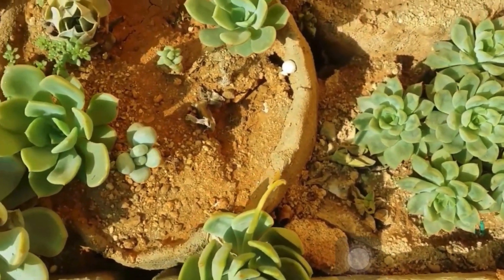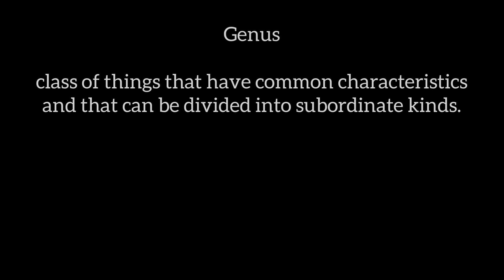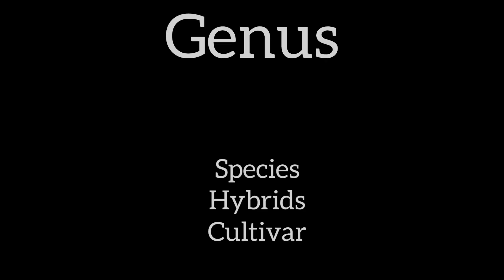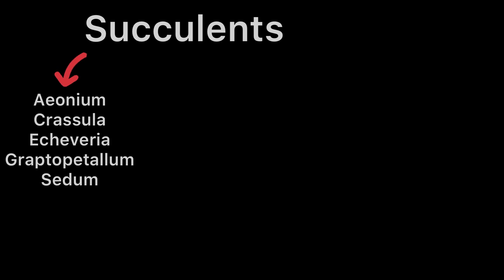Let's first understand what exactly a genus is. Genus has different meanings depending on where it's applied. When talking about succulents, genus is basically a class of things that have common characteristics, and it's further divided into subdivisions like species, cultivars, and hybrids. There are a lot of genera under succulents — 'genera' being the plural form of 'genus'.